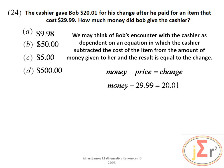The money we do not know. The change is 20 dollars and 1 cent, and the price of the item is 29.99. So 29.99 is taken away from the money that Bob gives to the cashier, and the change is the result.